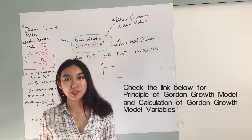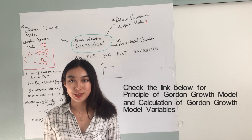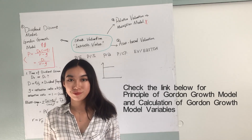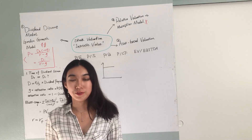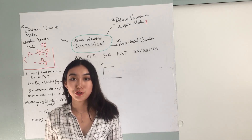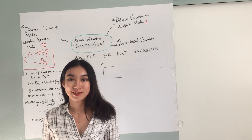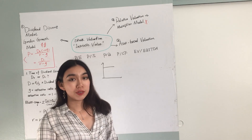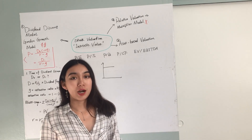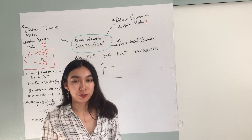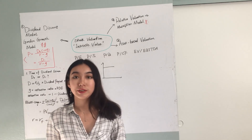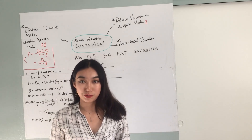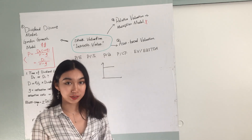We will also talk about the multi-stage Gordon growth model, which can solve the inconsistency of the dividend growth rate G. The multi-stage model is often used for companies in the early stage, where their dividend growth rates are not consistent.